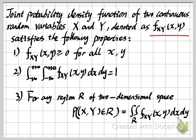The third requirement describes the meaning of our joint probability density function. If we take the double integral of the JPDF over a region R, this integral gives us the probability that our random variables X and Y fall inside that region. This is the meaning of the joint probability density function.